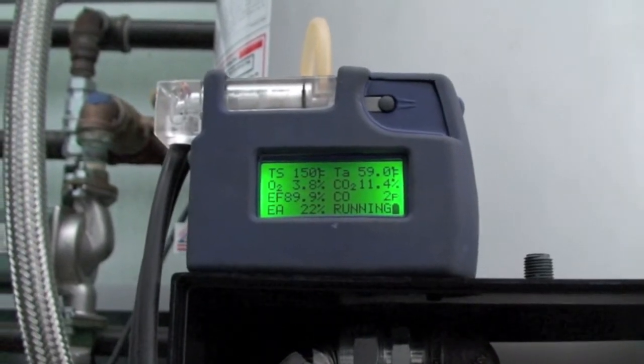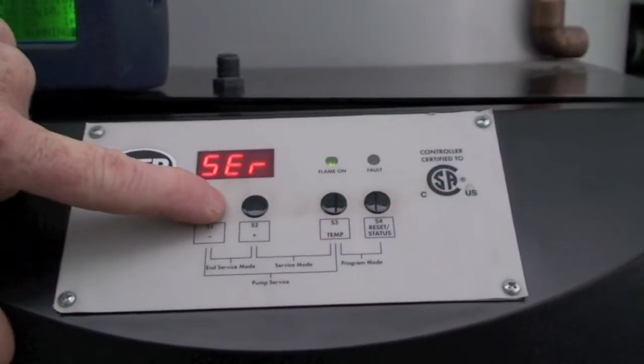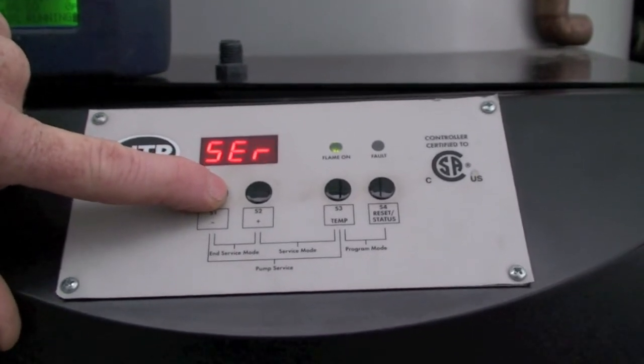Bring fan speed down into low fire using the S1 minus button. Once unit is in low fire, verify combustion levels are within range.